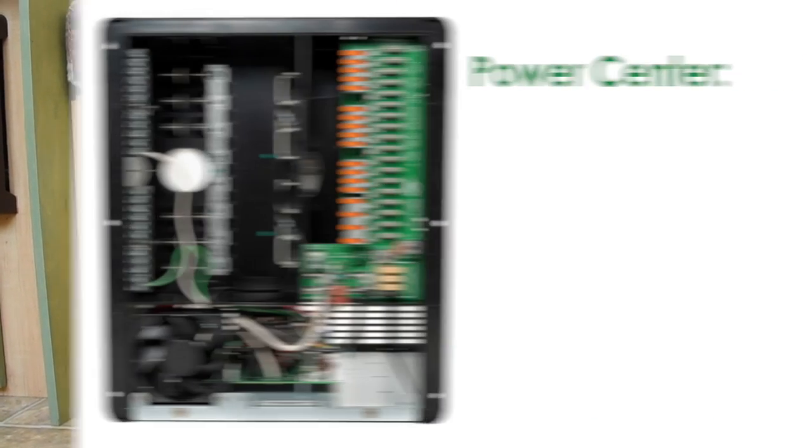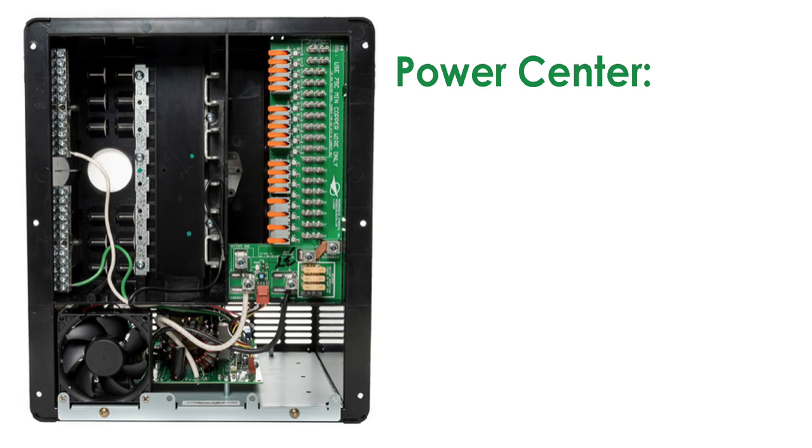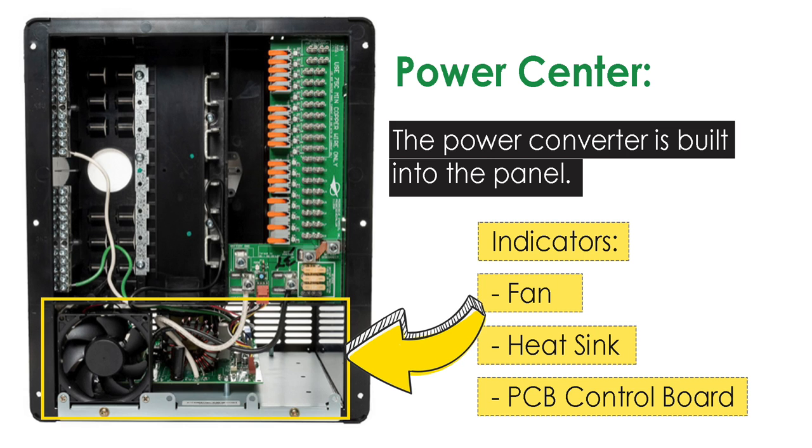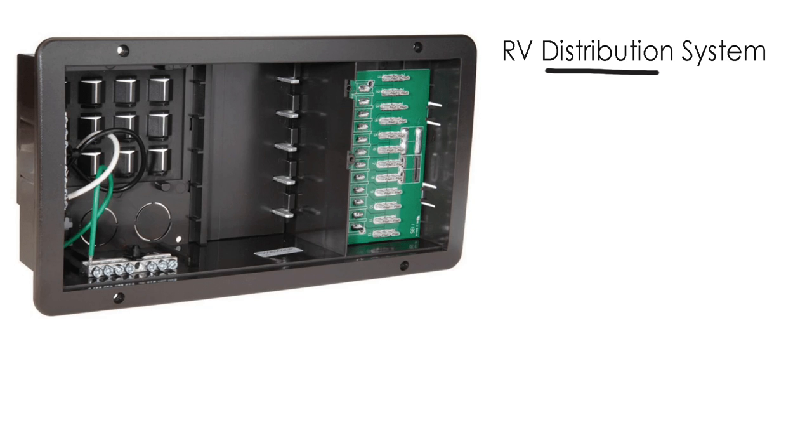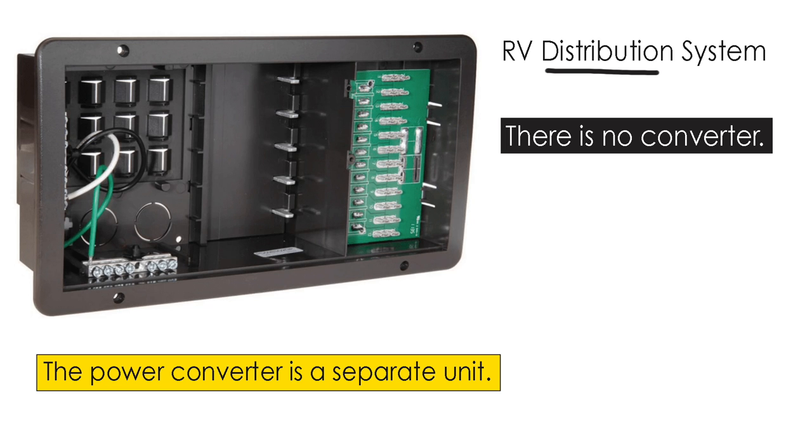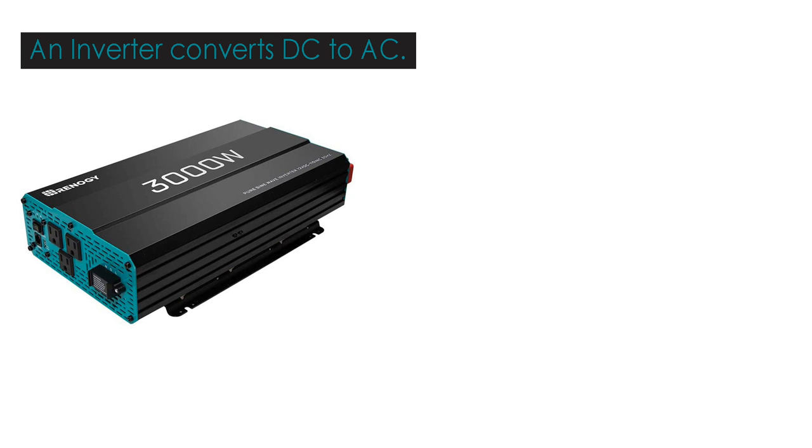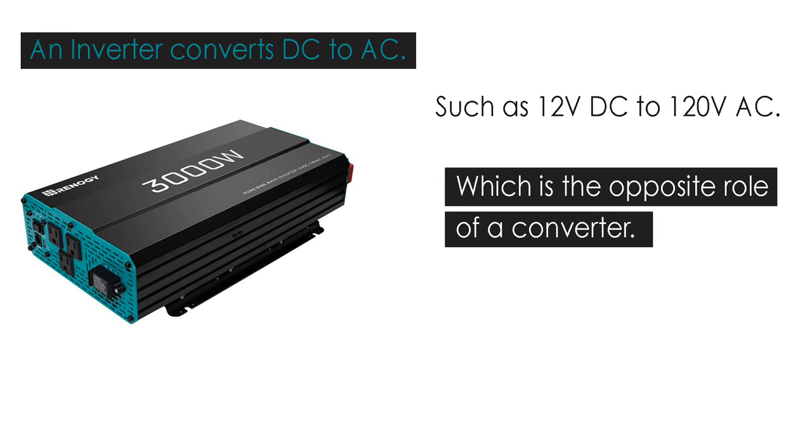So let's start with the power center. The power center has a converter built into the system and you can identify it generally because there's a fan or a heat sink or PCB control board in it. Where an RV distribution system is commonly used for larger RVs and the power converter is actually a separate device. Where an inverter, which is a completely different tool, is used to convert DC to 120 volt AC. So they're doing basically the opposite job.